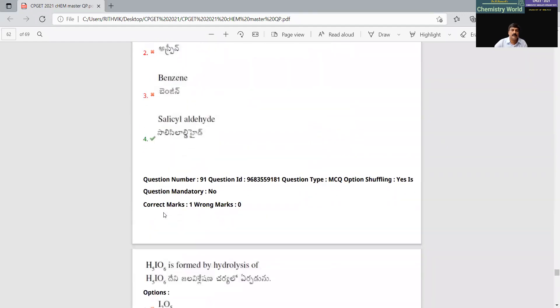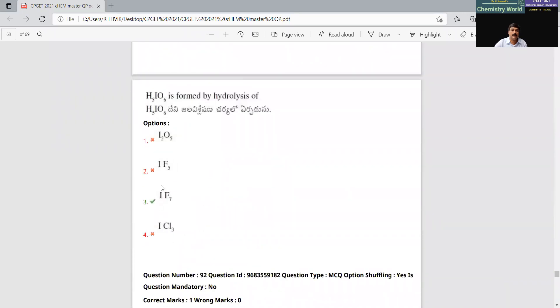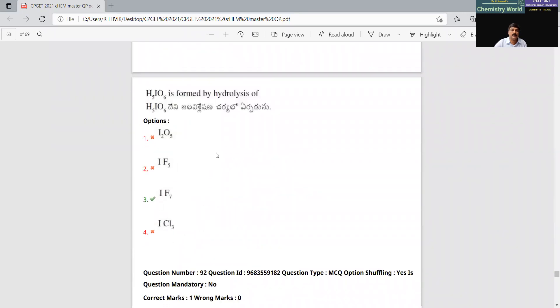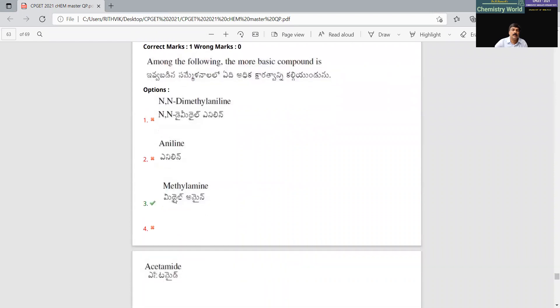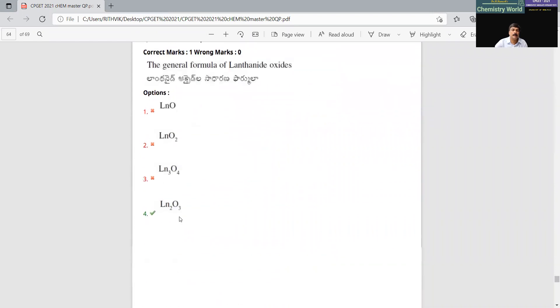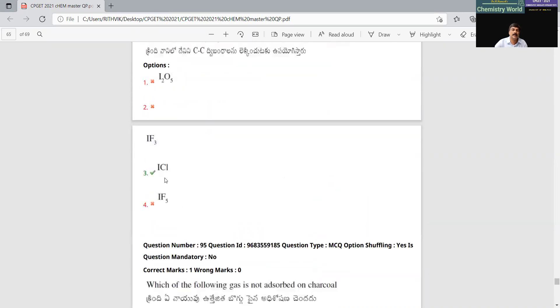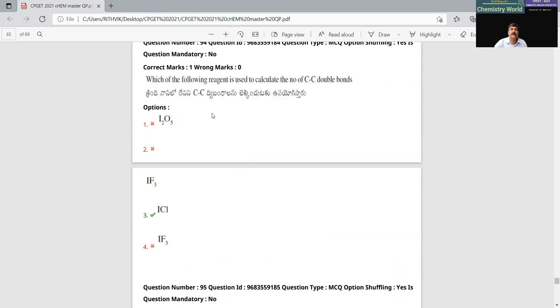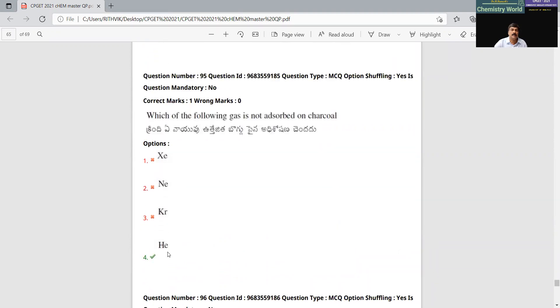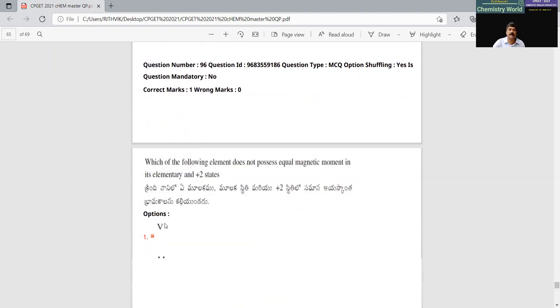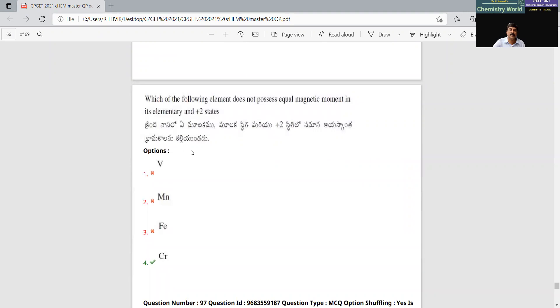Direct question. It is called a direct question. Diborane hydrolysis, B2H6, memory-based. This is called the parameter, right? ICl is used to quantitatively determine carbon-carbon. Interhalogen compound is used. Helium will not be adsorbed, even at low temperatures, so that will escape at all temperatures.